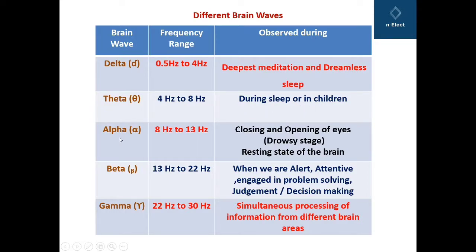The next frequency range is 8 Hz to 13 Hz, which is associated with alpha waves. Alpha waves are observed during the closing and opening of the eyes — that is, the drowsy stage — or the resting state of the brain.